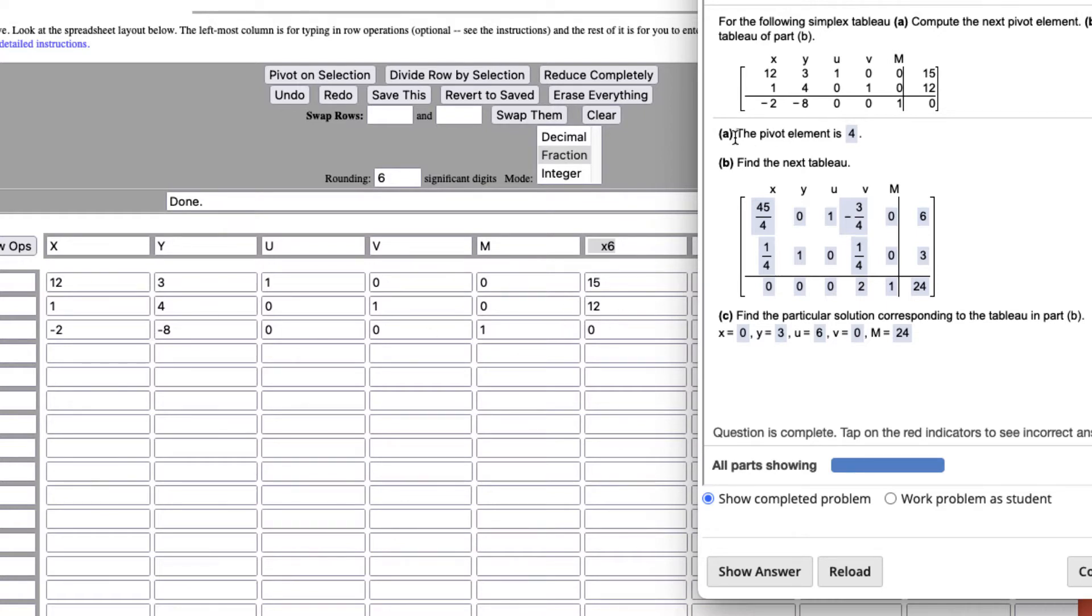Now we need to figure out the pivot element before we do any calculations. It's 4 right here. Why is the pivot element 4? Well, we look at these two negative values, and we look at the smaller of the two. Smaller of the two is negative 8, right? Now we're in that column.